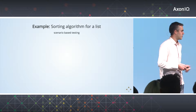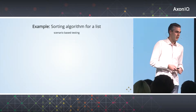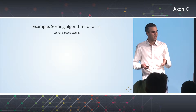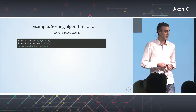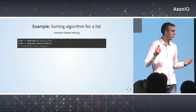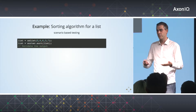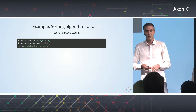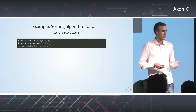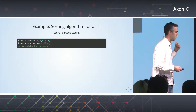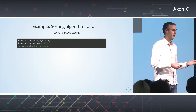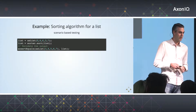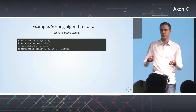If we have a sorting algorithm for a list, the traditional way to test that is to set up a list with some values in it, apply your business logic, and then you want to validate the output. How do you validate the output of this list? You generate the list that is supposed to come out of your sorting algorithm, and then you compare the two.